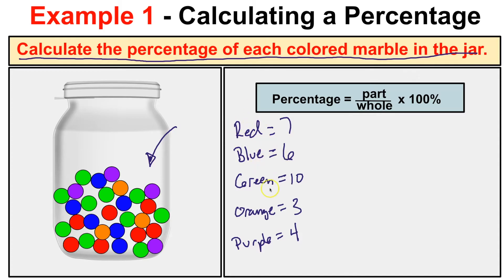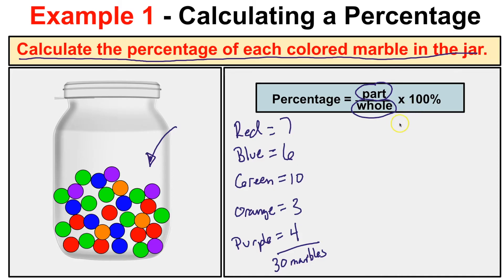We want to know the percentage of red, blue, green, orange, and purple marbles in this jar. To get the percentage we have to know two things: the part and the whole. We know the individual parts — seven red, six blue, ten green, three orange, and four purple. The whole is seven plus six plus ten plus three plus four, which is a total of 30 marbles. So to get the percentage, it's simple: take the part divided by the whole times 100.